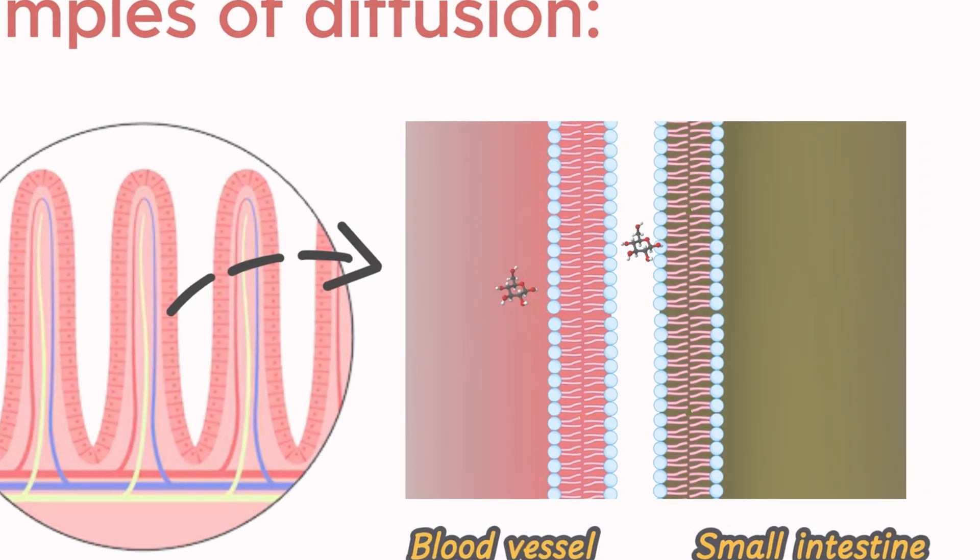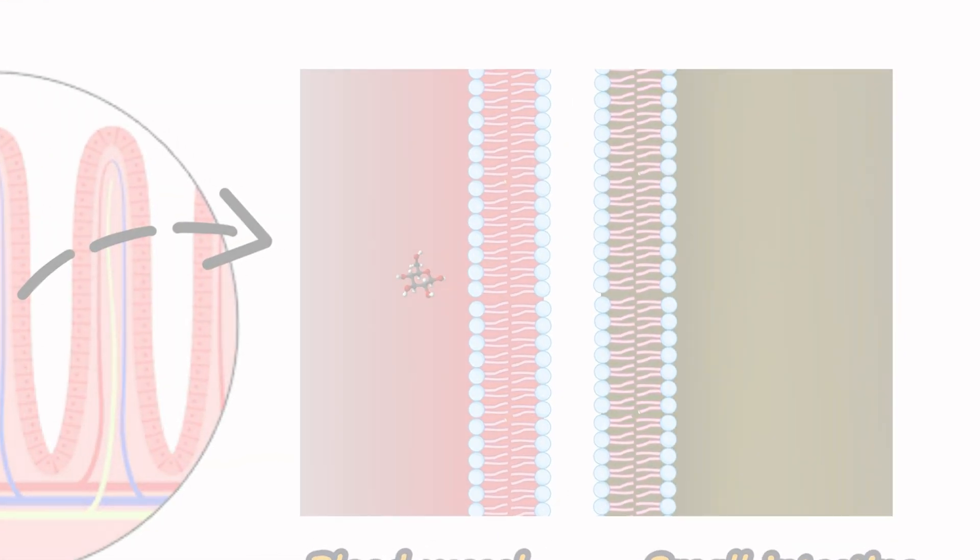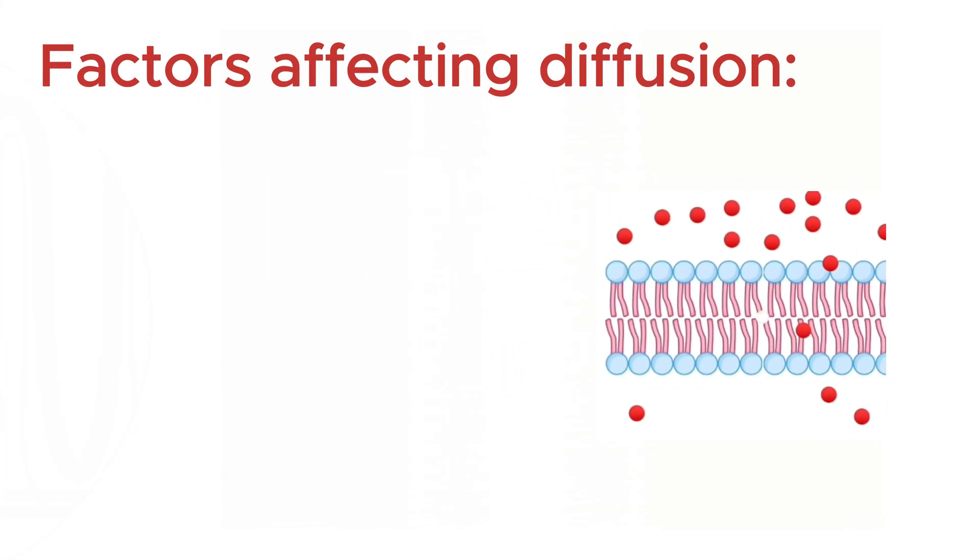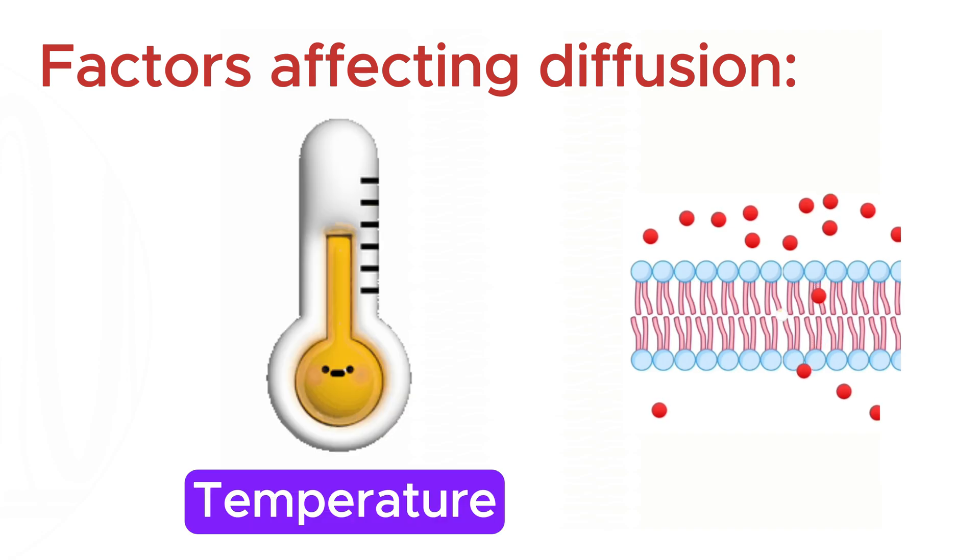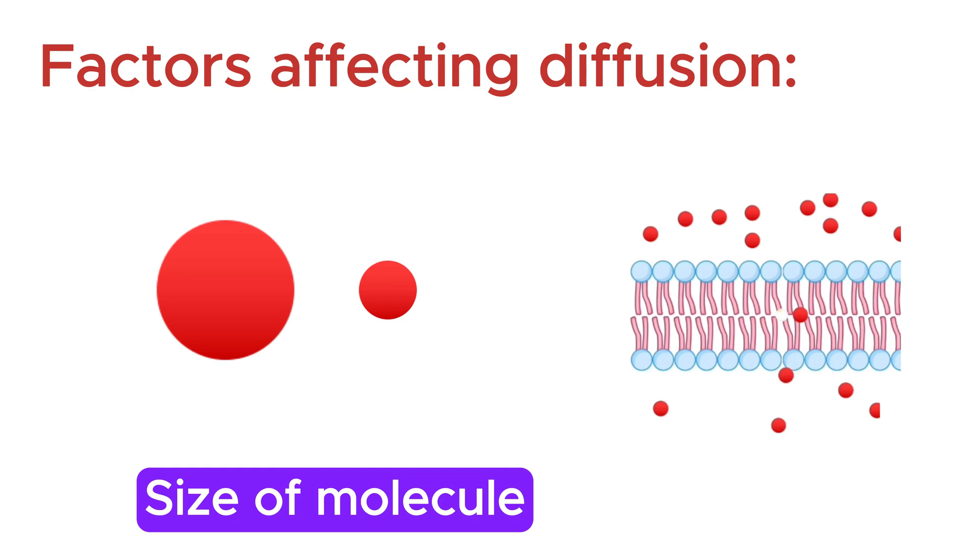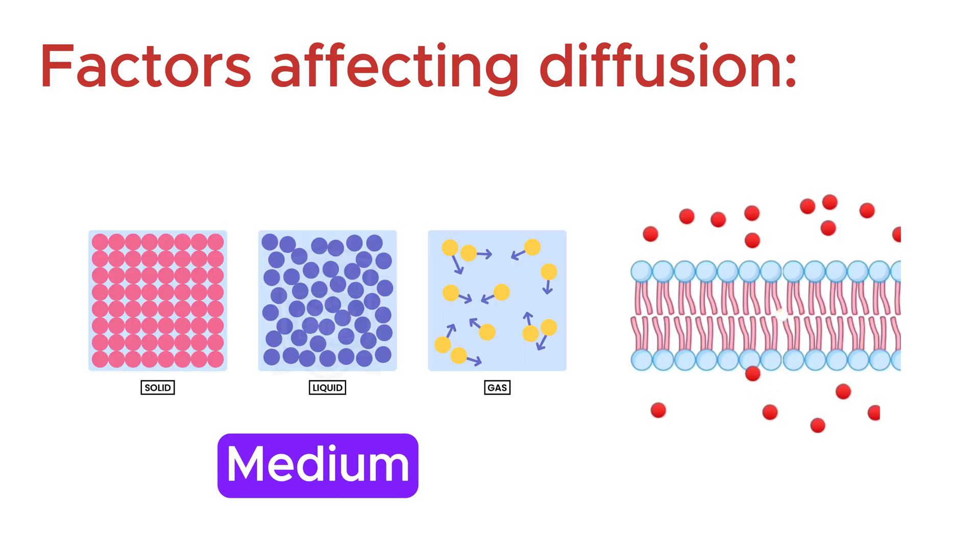Although diffusion is constantly occurring, it doesn't happen at a fixed rate. Its speed can increase or decrease depending on several factors such as temperature, the concentration gradient, the size of the molecules, and the medium through which diffusion takes place.